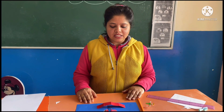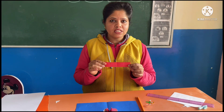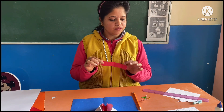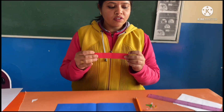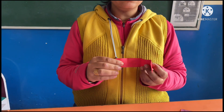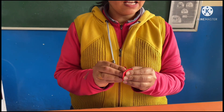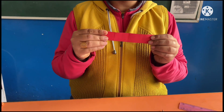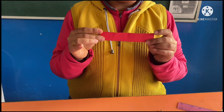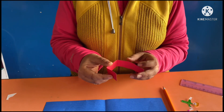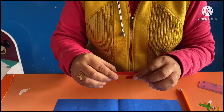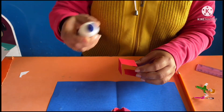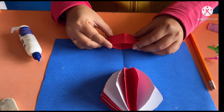Now let's make a basket. For this I have taken a red rectangular sheet 15 by 3. Now fold it from the center, make another fold from the center, open the paper and you will see the creases. Now I am going to paste the basket on the card here.